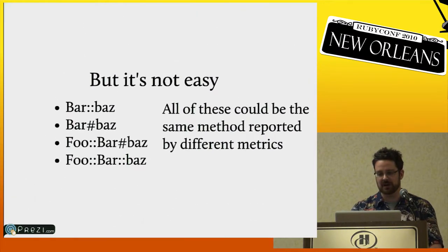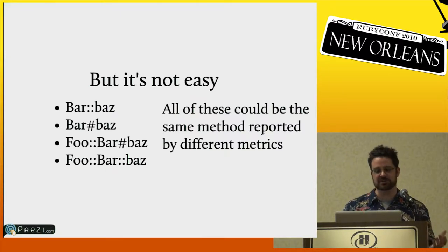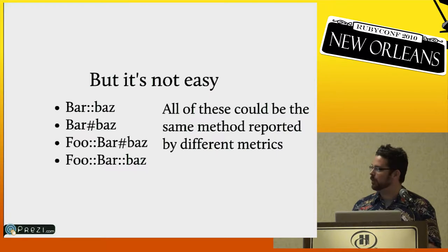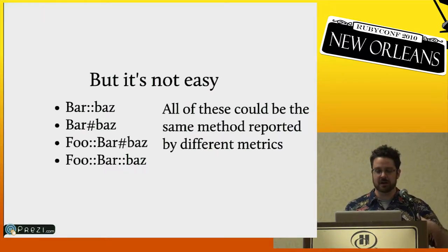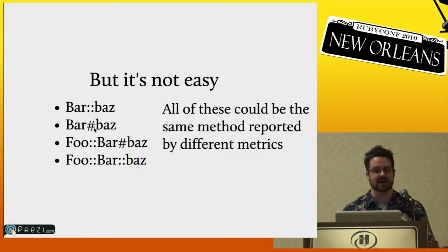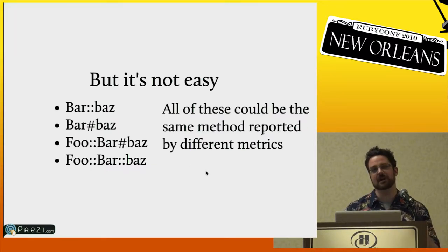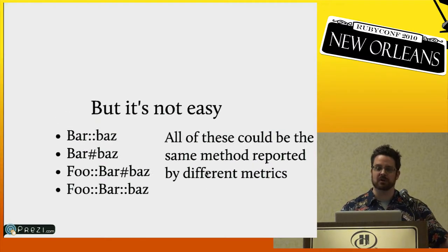We had to pull all this stuff in. It sounds trivial, but there are a lot of standards — the great thing about standards is there's so many to choose from. Any one method could be represented as 'bar#baz' or 'bar.baz.' Some metrics report with a hash sign for class methods, some always use a hash sign. Some metrics keep a module that wraps around a class, but some won't report the module. So these could all be the same method and you have to find a way to extract out all the differences.